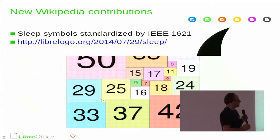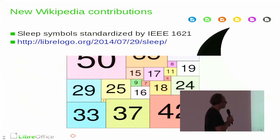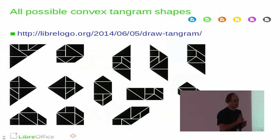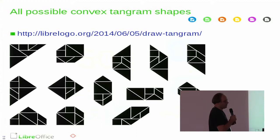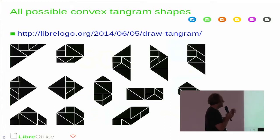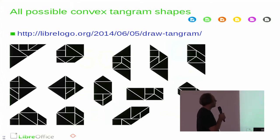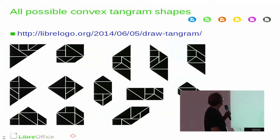Another example is a mathematical problem: how can we tile a square using other squares whose sizes are all different and have integer lengths? This was one of Erdős's problems — the famous Hungarian mathematician, 'the boy who loved math.' Somebody proved that the minimal solution to this problem is what we can see in this image. It would be hard to draw this by hand in Draw, but it's only about 50 lines of code in LibreLogo. The source code is also on LibreLogo.org.